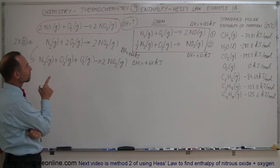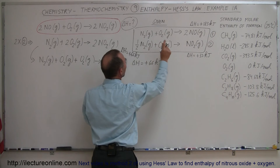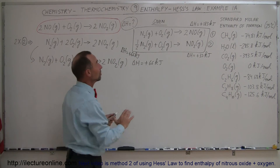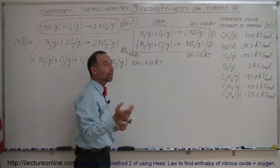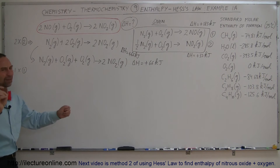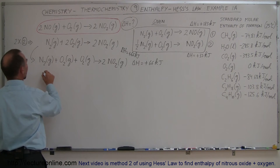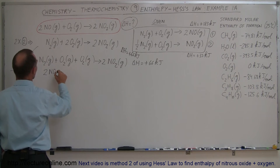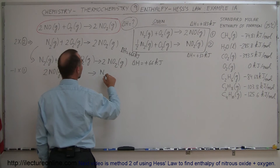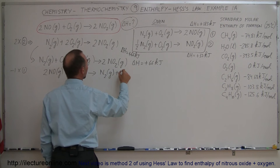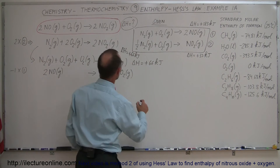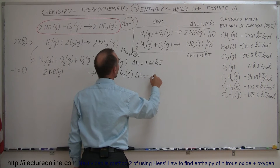Now I'm going to add to that equation 1, but reversed — turned around. I'm going to take equation number 1 and write it in reverse, which means I will also reverse the enthalpy change, making it negative. So that's negative 1 times equation number 1. I end up with 2 moles of nitrogen monoxide gas on the left reacting to give 1 mole of nitrogen gas plus 1 mole of oxygen gas. When I reverse the equation I reverse the enthalpy change, so that will be delta H equal to minus 183 kilojoules.